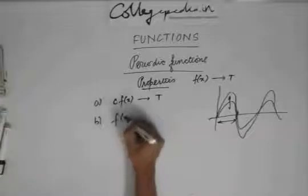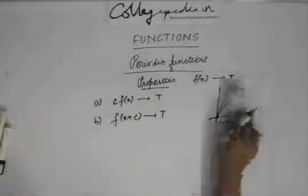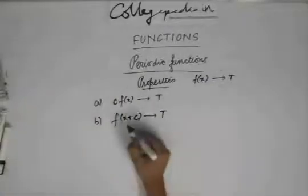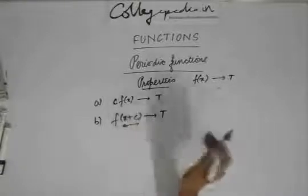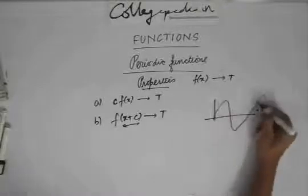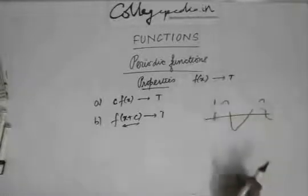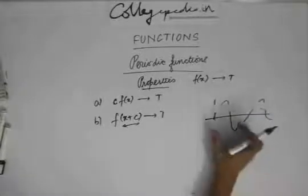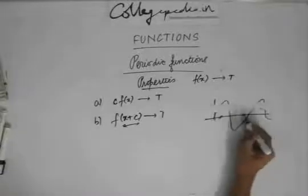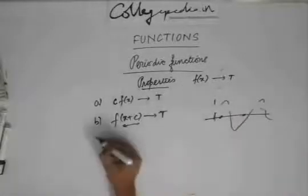The next property is: f(x + c) is also periodic with the same period t. If I add a constant c to x, the function gets shifted horizontally — left or right. This is just a horizontal shift, so the distance between two repeating points doesn't change. Therefore, the period of the function remains t.